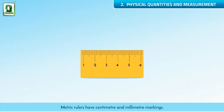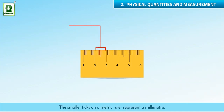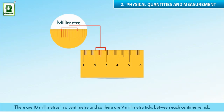Metric rulers have centimeter and millimeter markings. The large markings on a metric ruler represent a centimeter. The small ticks on a metric ruler represent a millimeter. There are ten millimeters in a centimeter, and so there are nine millimeter ticks between each centimeter tick.